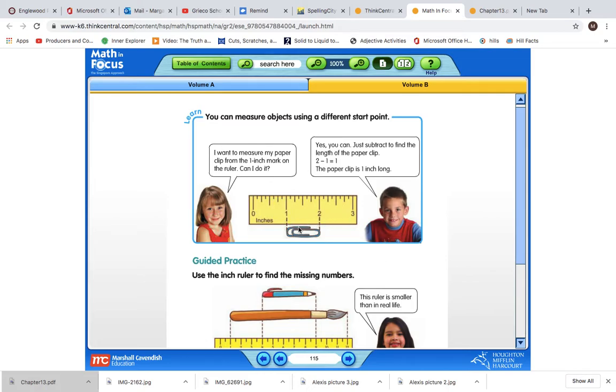Do you remember what you're supposed to do if you want to measure an object on a ruler, but you're not starting at the very beginning of the ruler? I'm looking at this page. This is actually from the textbook. What we have to do is take where you began at the ruler and where you ended at the ruler and find the difference. And when we find the difference, we subtract.